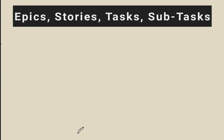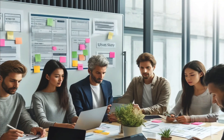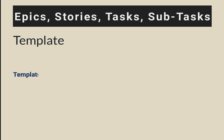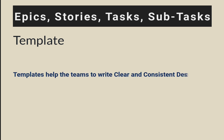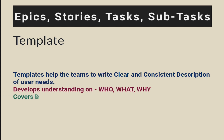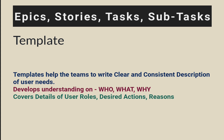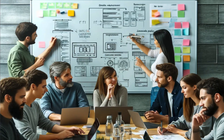Now let's look into the template of user stories. User stories have a specific template or format in which they should be written. User story templates help teams write clear and consistent descriptions of user needs. They ensure that everyone understands who the user is, what they want, and why it matters. Templates have details like user roles, desired actions, and reasons for implementing the user story. This makes it easier to create stories and address the user's needs effectively. Using a template, teams can quickly capture essential information and streamline the process.